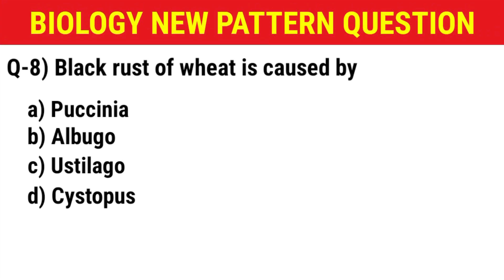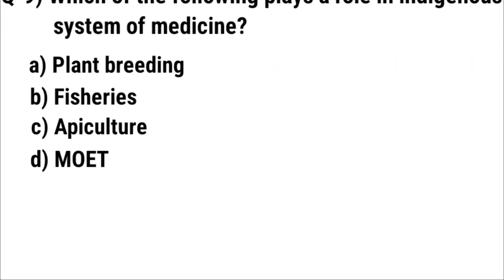Next question: Black rust of wheat is caused by — (A) Puccinia, (B) Albugo, (C) Ustilago, (D) Cystopus. The correct answer is option A: Puccinia.